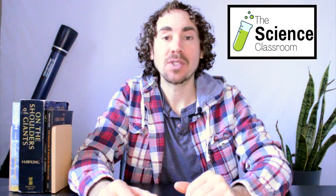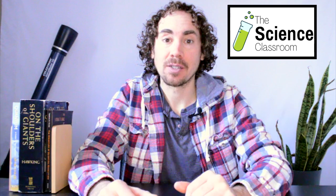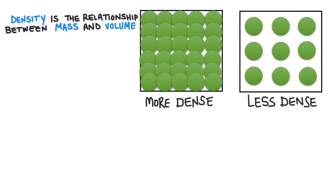In this video, we're going to talk about how to solve for the density of an object. Density is a relationship between the mass and the volume of an object. Mathematically, it's the ratio of the mass of an object to its volume, and it's represented by this equation.